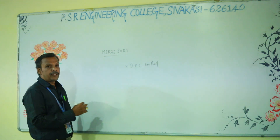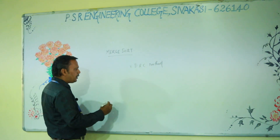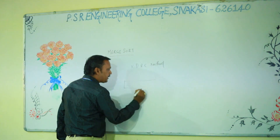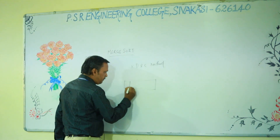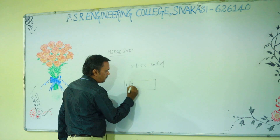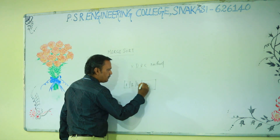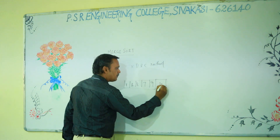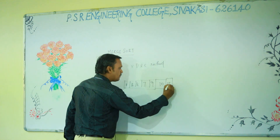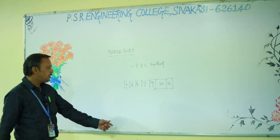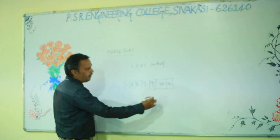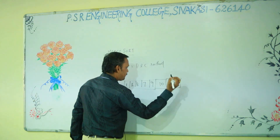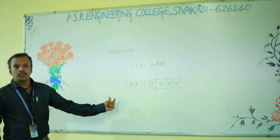From the divide and conquer method, we are discussing about Merge Sort. So the given list — for example, that is a given list. The list has 8 elements. This is an unsorted array.